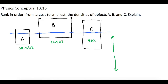So with these ones, since A is more submerged in the water in relationship to its overall volume, A is going to be the most dense. Object C, since half of it is in the water, will be next in density. And then for object B, very little of it compared to the overall volume is submerged in the water, so that one will be the least dense.